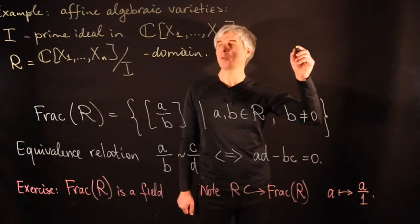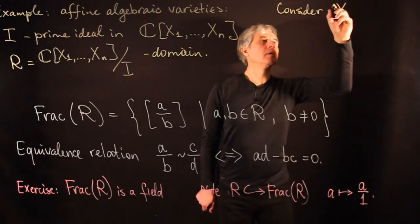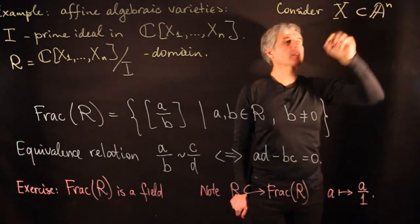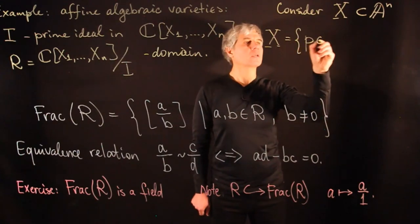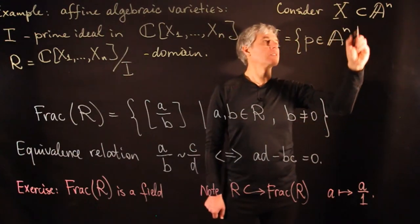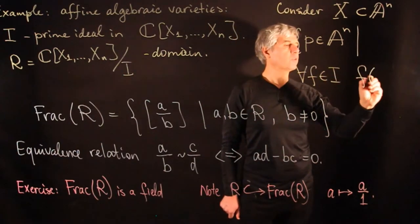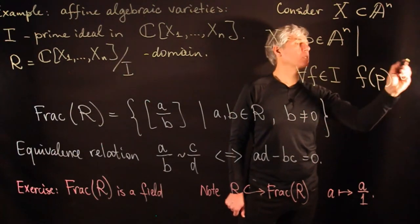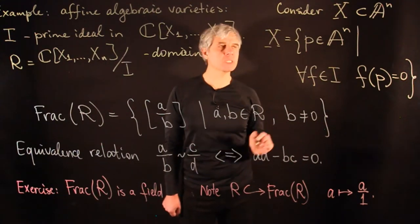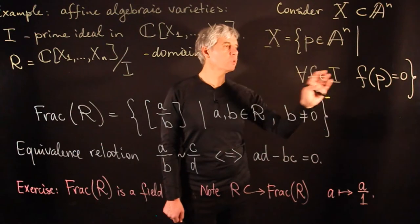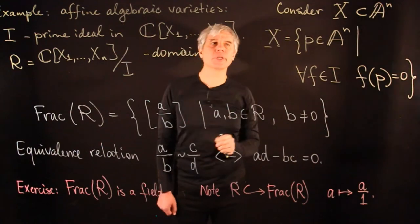Geometrically, this describes the following situation. Consider the set X in n-dimensional affine space consisting of points such that for every F in the ideal, F evaluated at that point equals 0. We interpret the ideal I as a system of polynomial equations, and X is the set of solutions of this system. Such sets X are called affine algebraic varieties.